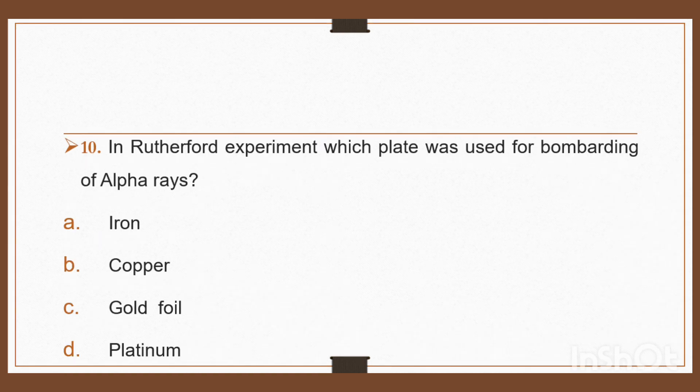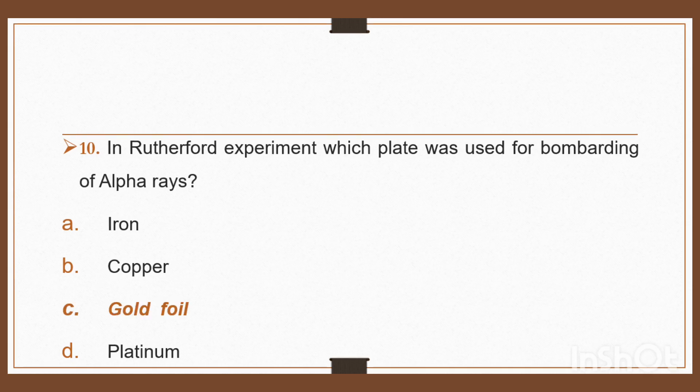Question 10: In Rutherford's experiment, which plate was used for bombarding of alpha rays? Option A: iron, option B: copper, option C: gold foil, option D: platinum. In Rutherford's experiment, gold foil plate was used for bombarding of alpha rays. Right, option C: gold foil.